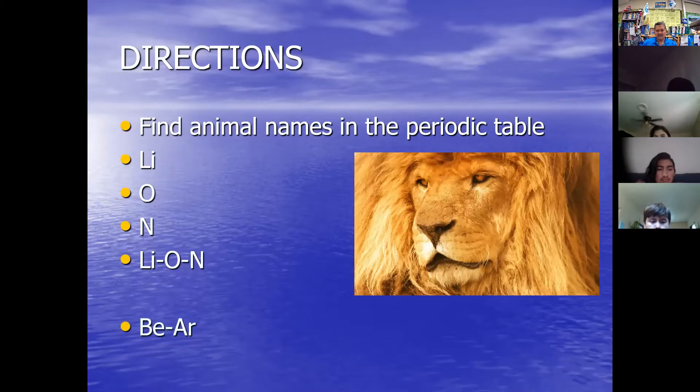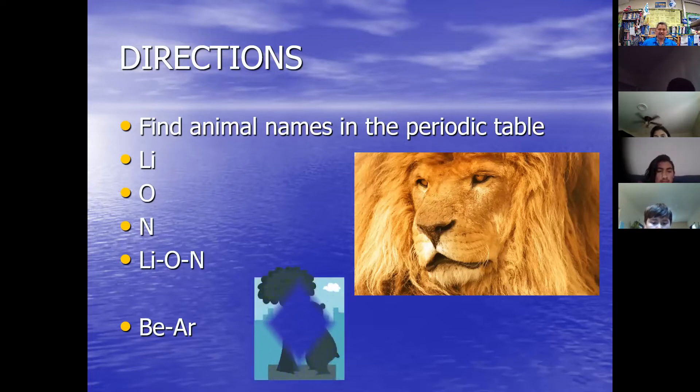Here's another one. There's beryllium and argon. Beryllium and argon give you bear. So find names in the periodic table. Lithium, oxygen, nitrogen gives you lion and beryllium and argon give you bear.